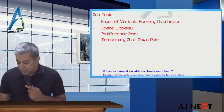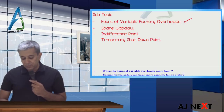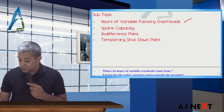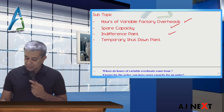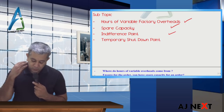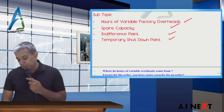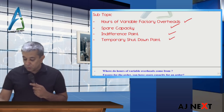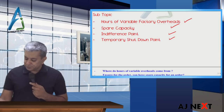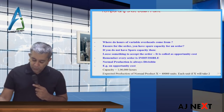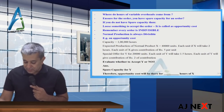First is hours of variable overhead. Second, spare capacity. Third, indifference point. And fourth, temporary shutdown point. So let's start. Welcome to the series, let's continue.